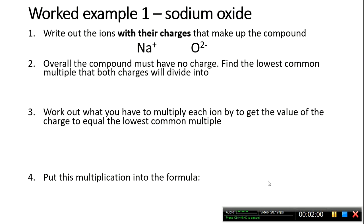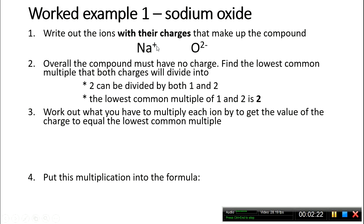Overall, the compound must have no charge. So, we need to find the lowest common multiple that both charges will divide into. In this case, 2 can be divided by both 1 and 2. That means the lowest common multiple is 2.